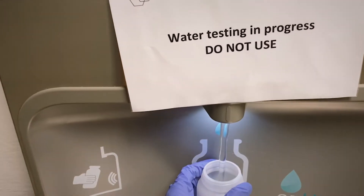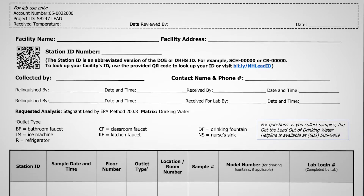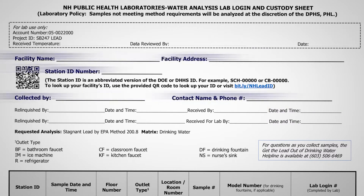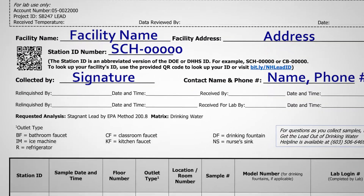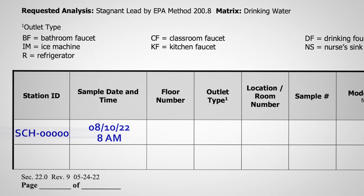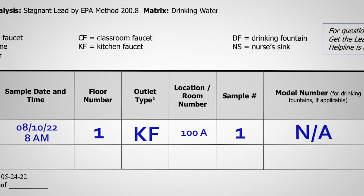In your kit, you also received a chain of custody form, or COC. This helps the laboratory keep track of your samples, so it's important to fill it out correctly. Fill out the information at the top of the form. Then complete a row on the COC for every sample you collect. Some of this information may be pre-filled, but should match the information on the bottle label. Make sure that the sample number matches the number from the outlet inventory if one was completed, and don't forget to record the date and time of your sample.